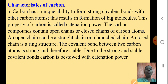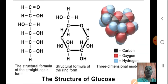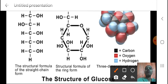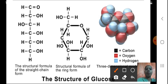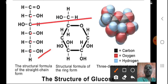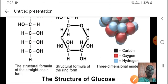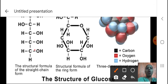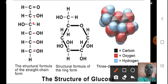I hope the first characteristic of Carbon is clear to you. Here I am showing you the structure of glucose — this is a complex structure, but for your understanding of the straight chain form. You can see the structural formula of a straight chain form. All these Carbons are attached in a straight chain. This is the structural formula of the straight chain form of glucose — this is the structure of how glucose is drawn.